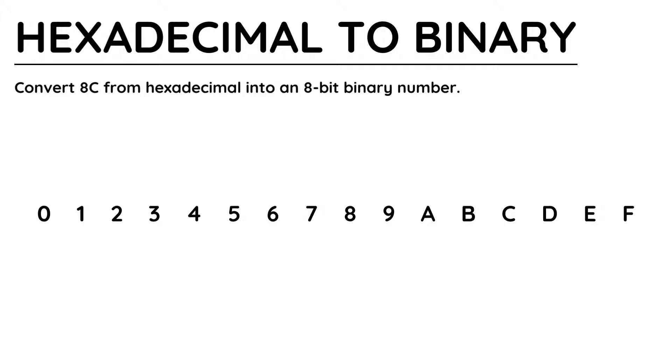Hexadecimal uses 0 to 9, just like the denary system, and then A to F. Hexadecimal only uses single digit numbers, so 10 is converted into A, 11 becomes B, up to 15, which is turned into F. It's a sensible idea to write the A to F equivalent somewhere on your page to remind you.